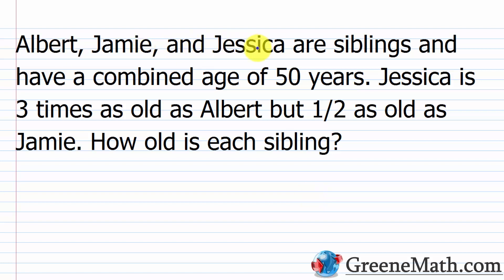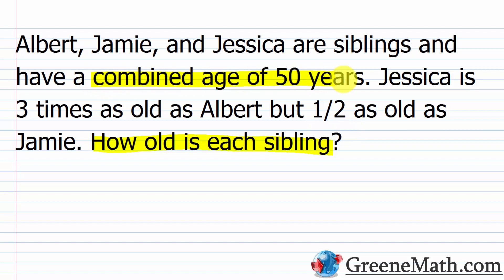Albert, Jamie, and Jessica are siblings and have a combined age of 50 years. Jessica is three times as old as Albert, but half as old as Jamie. How old is each sibling? We need to find how old Jamie, Albert, and Jessica each are. We're given that they have a combined age of 50 years, and we've been given some comparisons: Jessica is three times as old as Albert but half as old as Jamie.